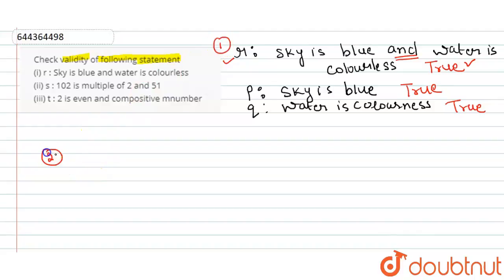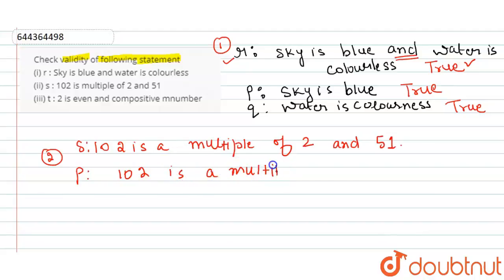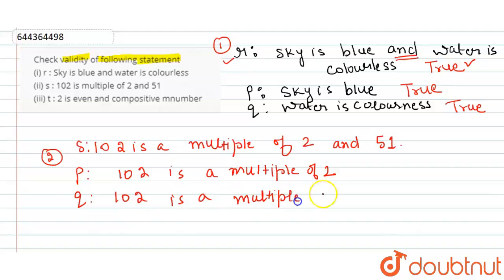The second statement S is: '102 is a multiple of 2 and 51.' This is also a compound statement with two components: P — '102 is a multiple of 2', and Q — '102 is a multiple of 51'.